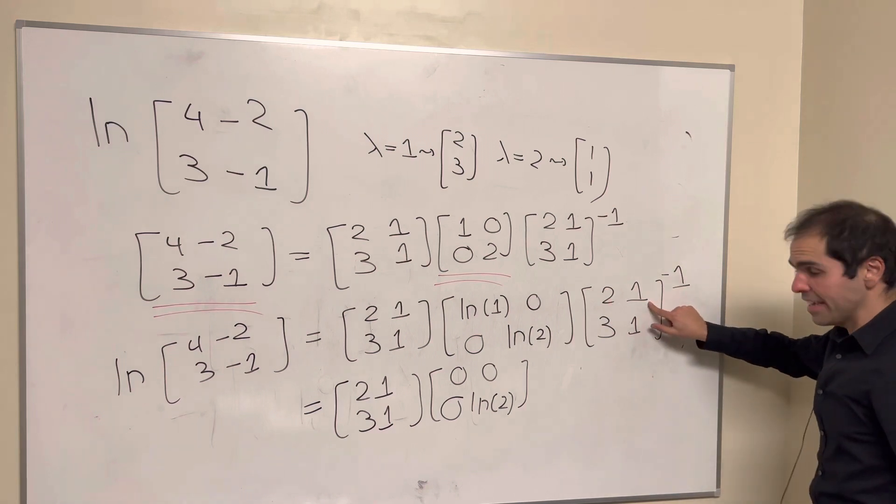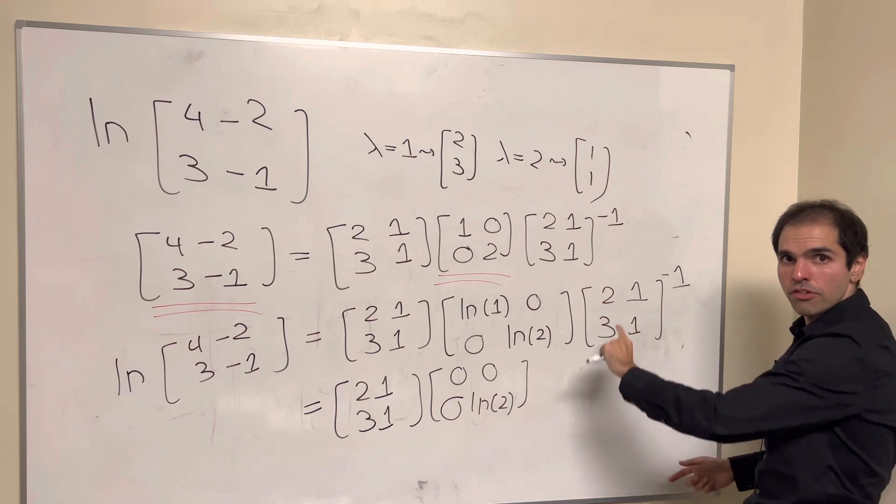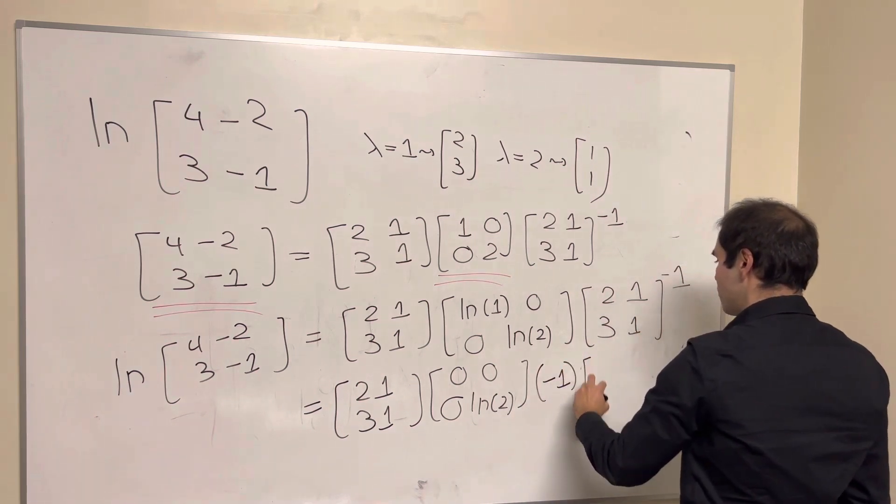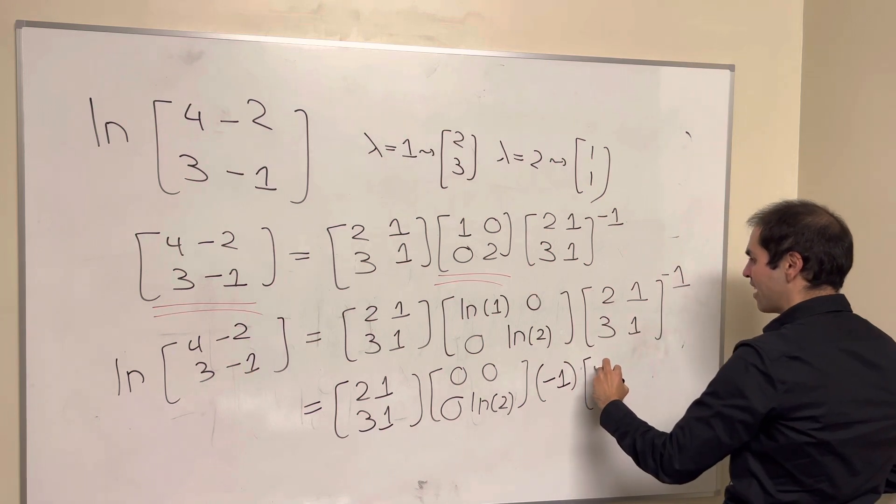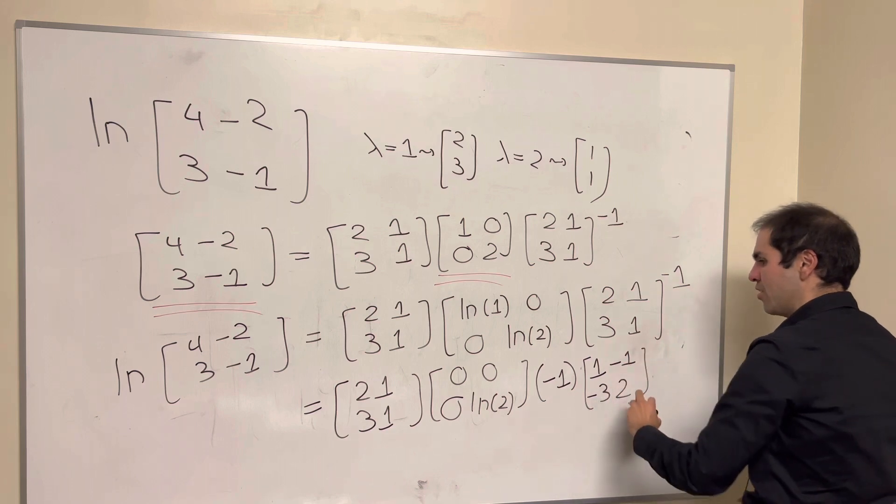And then, for this inverse, it's 1 over the determinant, so 1 over 2 minus 3, which is 1 over minus 1, which is minus 1. You flip the diagonal terms, 1, 2, and you do minus for the anti-diagonal ones.